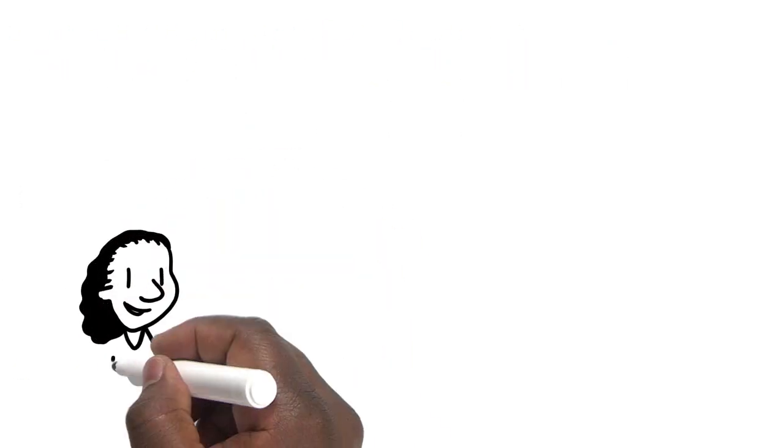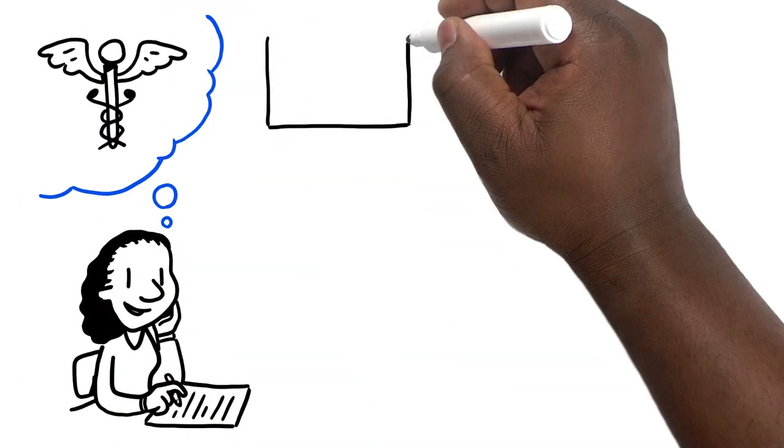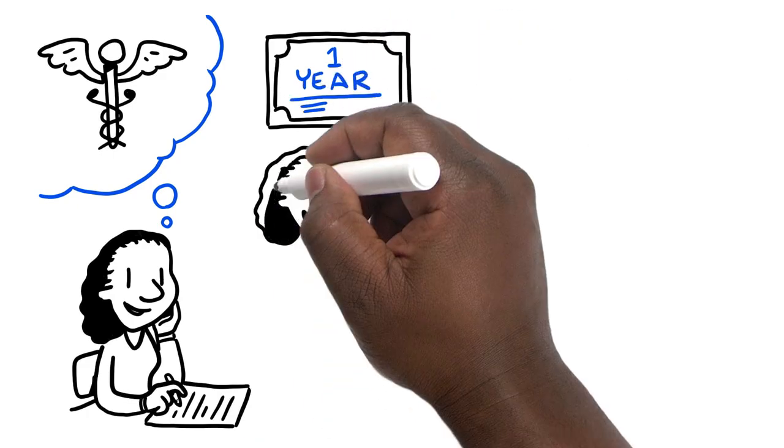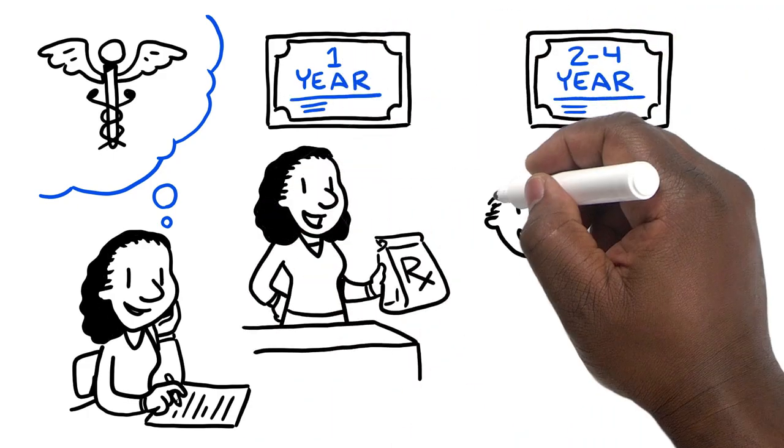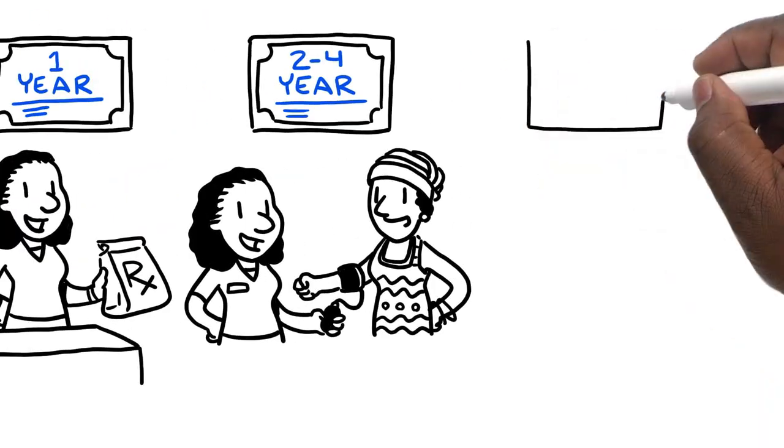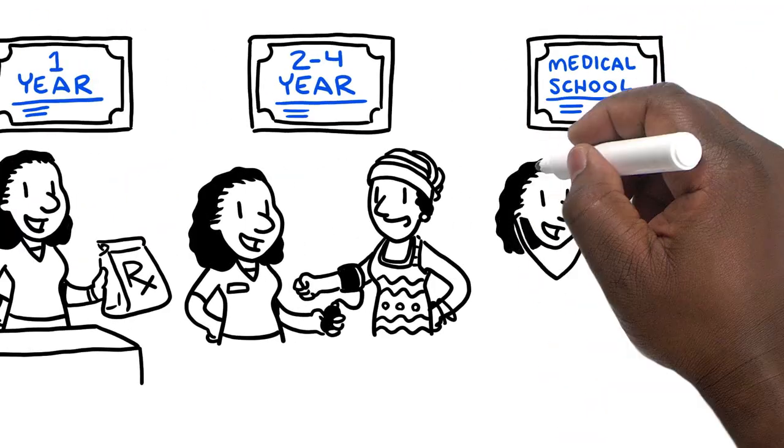A student interested in the healthcare field, for example, could earn a one-year certificate and become a pharmacy technician. Or she could earn a two-year or four-year degree and become a nurse. Or she might go to medical school to become a doctor.